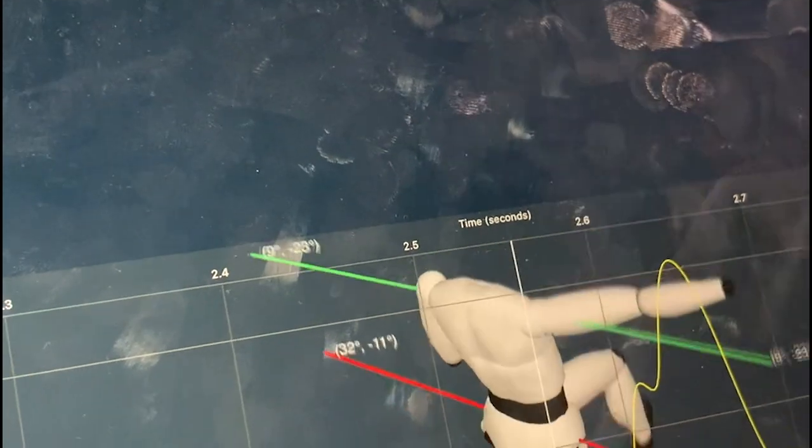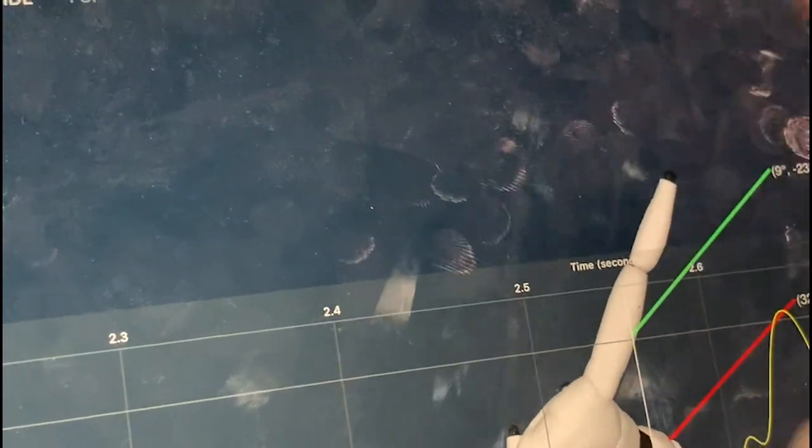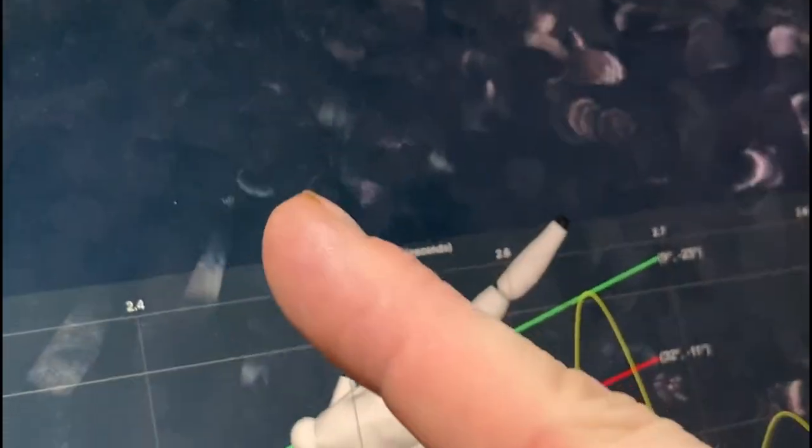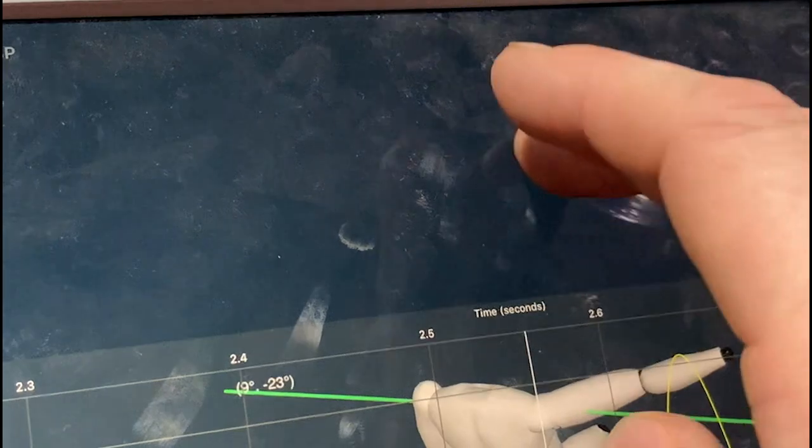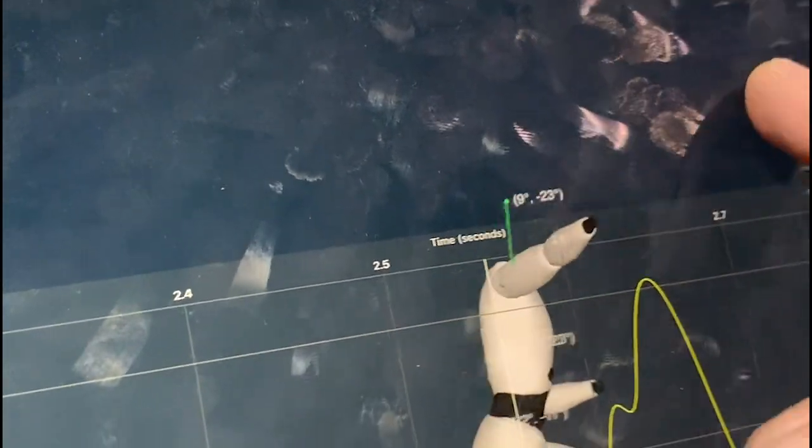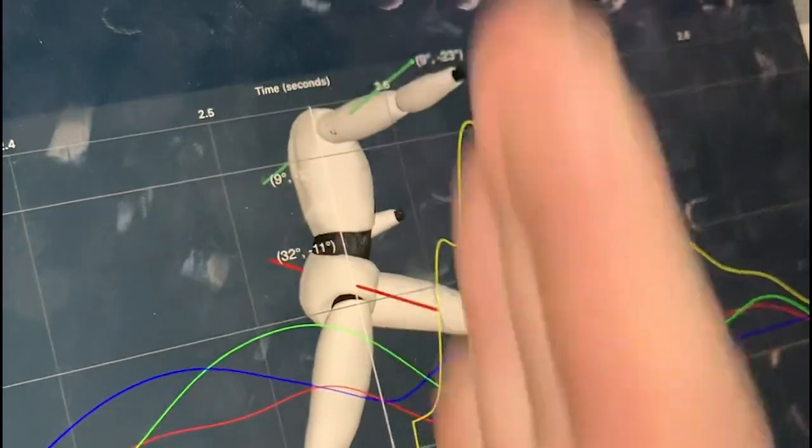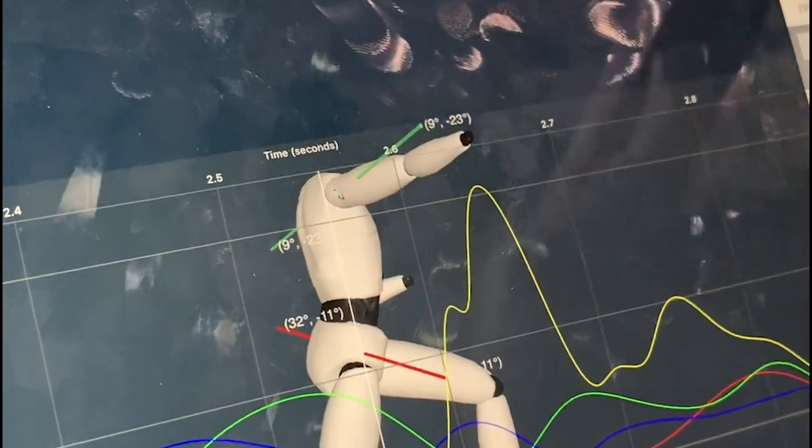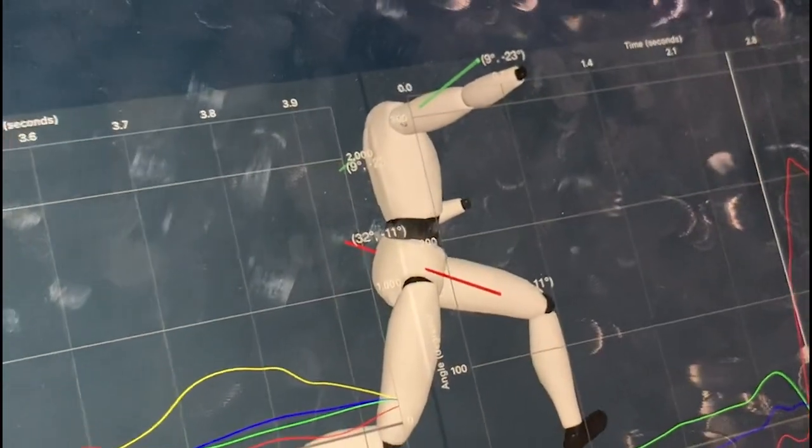When you hit release, you're supposed to be going this way. You're facing the first base dugout at release because you pulled so hard. Not only that, your trunk is straight up and down.